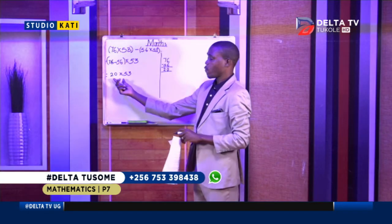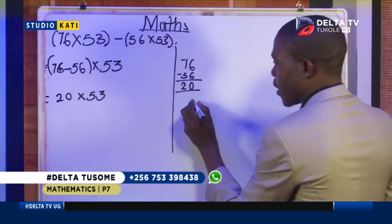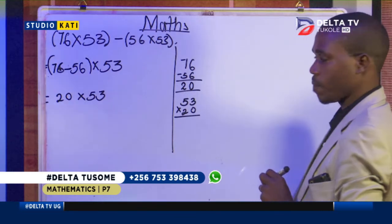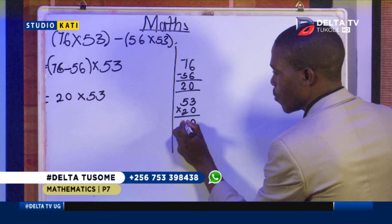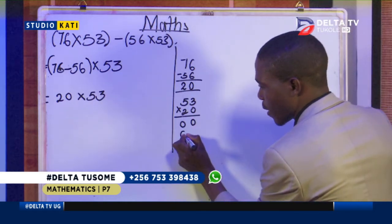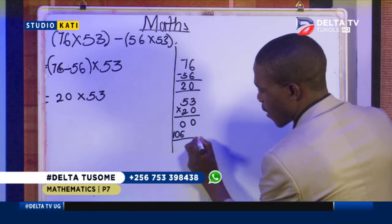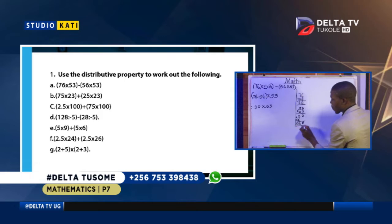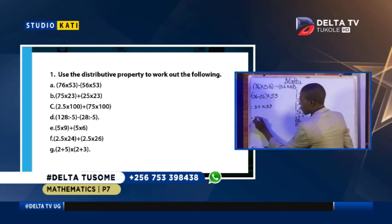This one is requiring us to find the product of 20 and 53. There are many methods we can use, but the commonest is: go aside, write 53 then say 20 times. Let's multiply: 0 times 3 is equal to 0, 0 times 5 is equal to 0. Then go to multiply 2: 2 times 3 we shall get 6, then 2 times 5 we shall get 10. Let's add up: 0, then 0 and 6 gives 6, then 0 and 1, therefore 20 times 53 is equal to 1060.